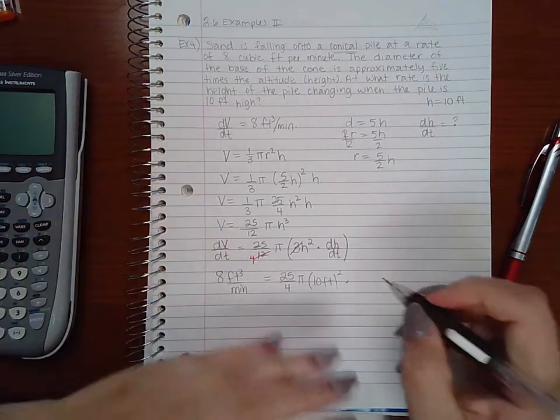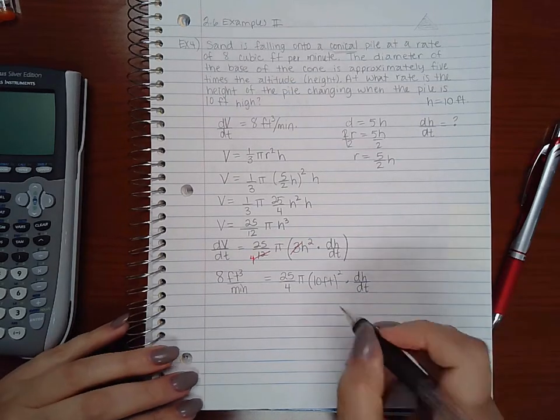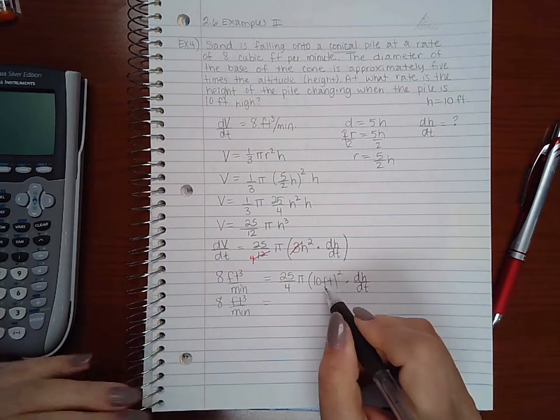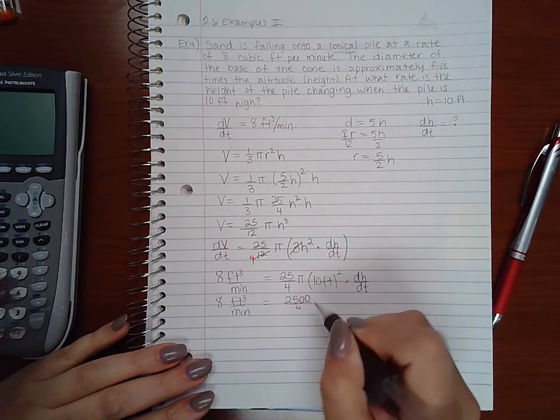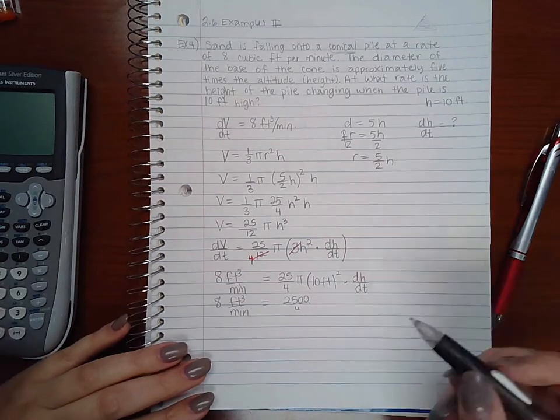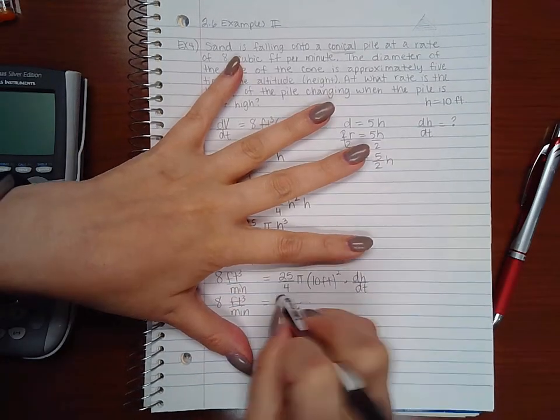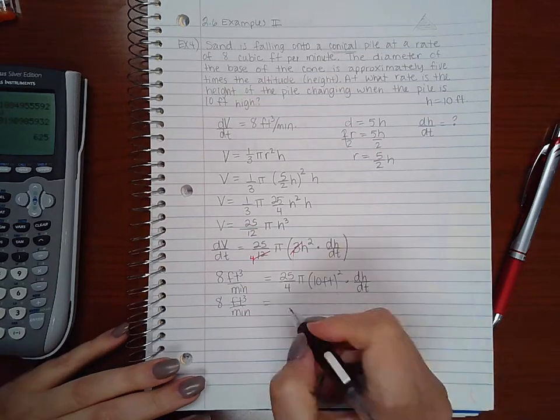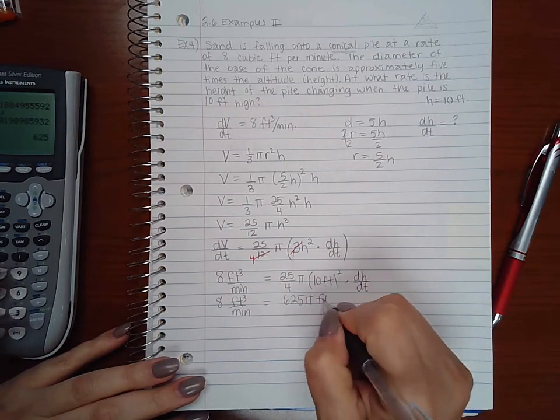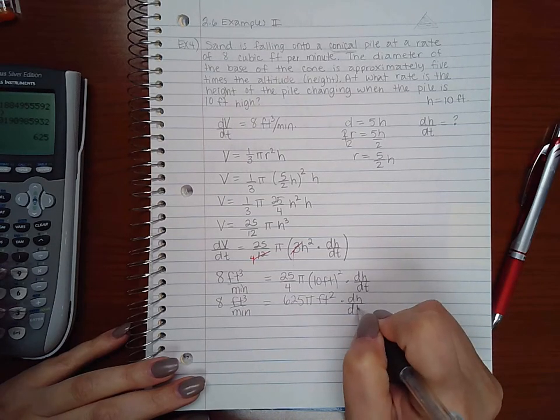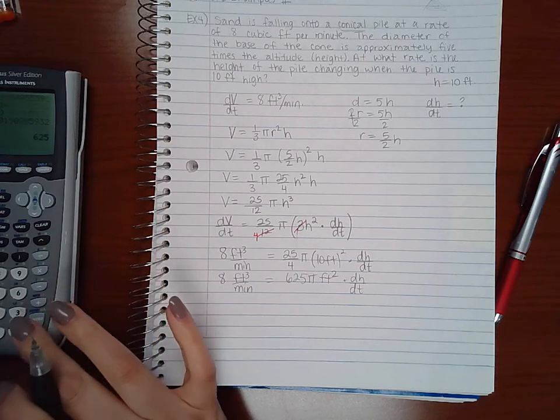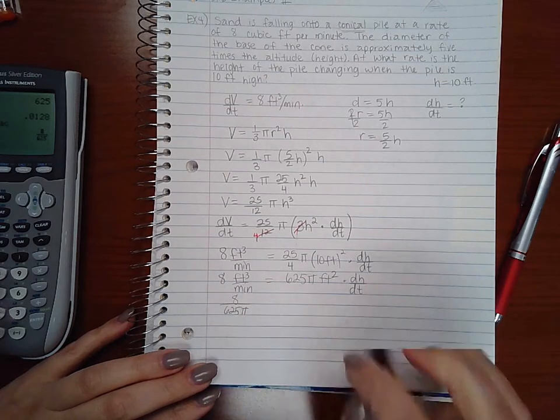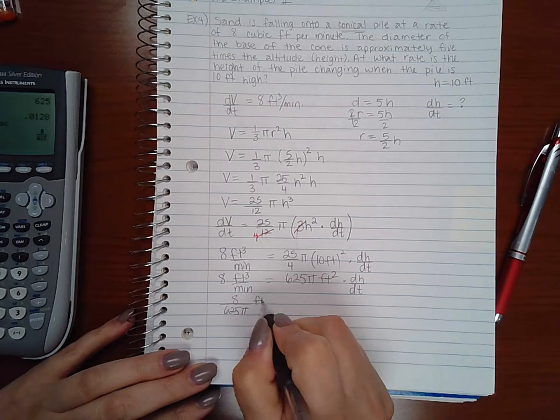And dh/dt is the unknown, so I'm going to leave that alone. So then now if I simplify this, this will be 2500/4 π. Well, I'll just reduce that all together, so 2500/4 will just be 625π feet squared times dh/dt. And if I divide both sides by 625, I end up with 8/625π. And if I'm dividing feet cubed by feet squared, I'll end up with feet per minute.